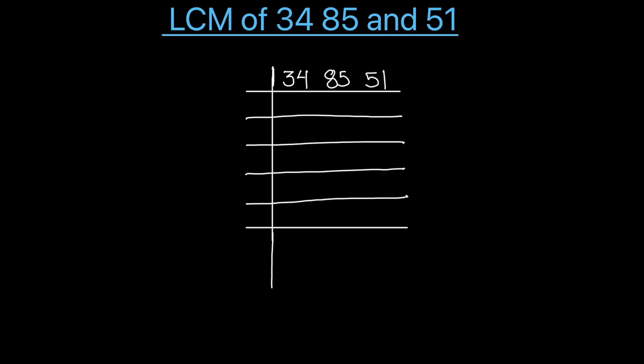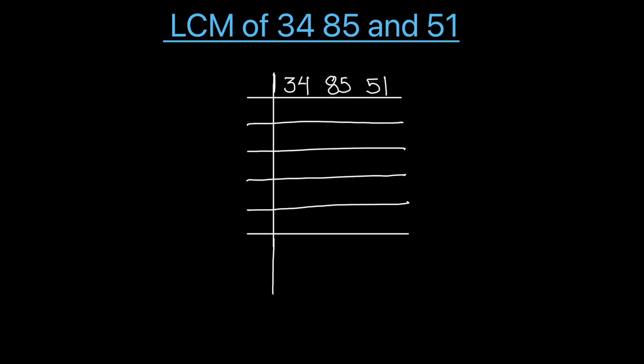So let's divide these numbers using prime numbers. First prime number is 2, so we'll divide 34 by 2. As 34 is an even number, it is fully divisible by 2. So we'll only divide 34; 85 and 51 will be as is. 2 times 17 is 34. So next we have 17, 85, and 51.